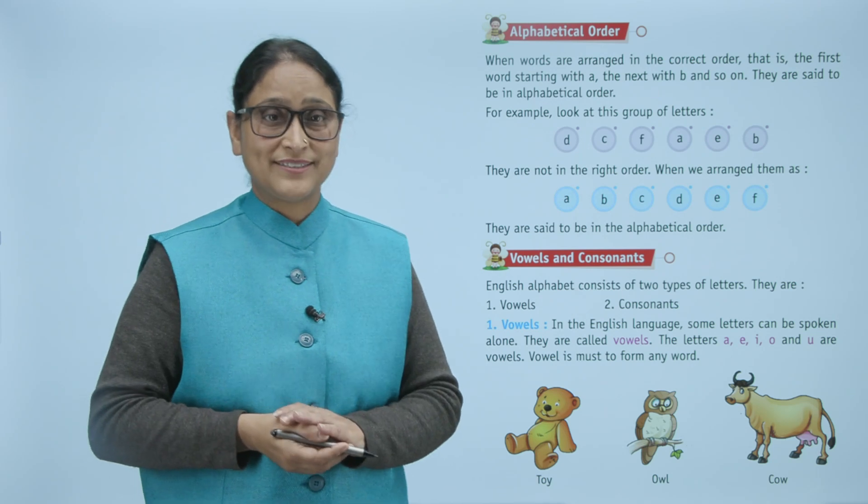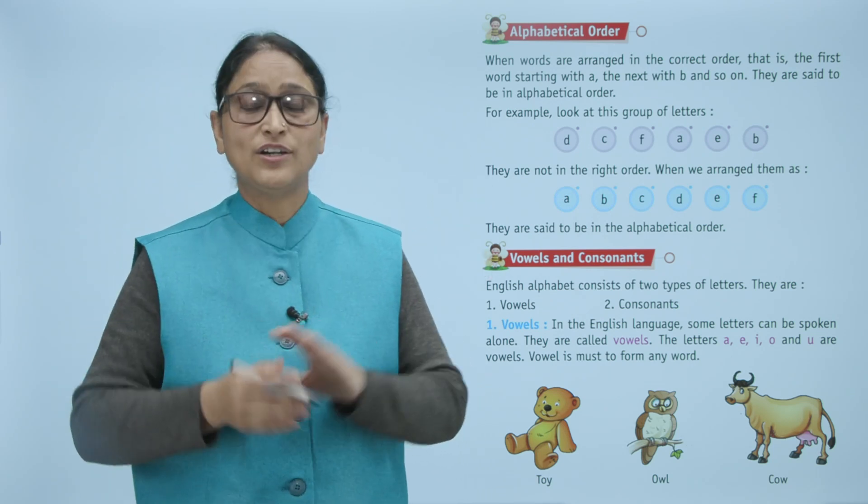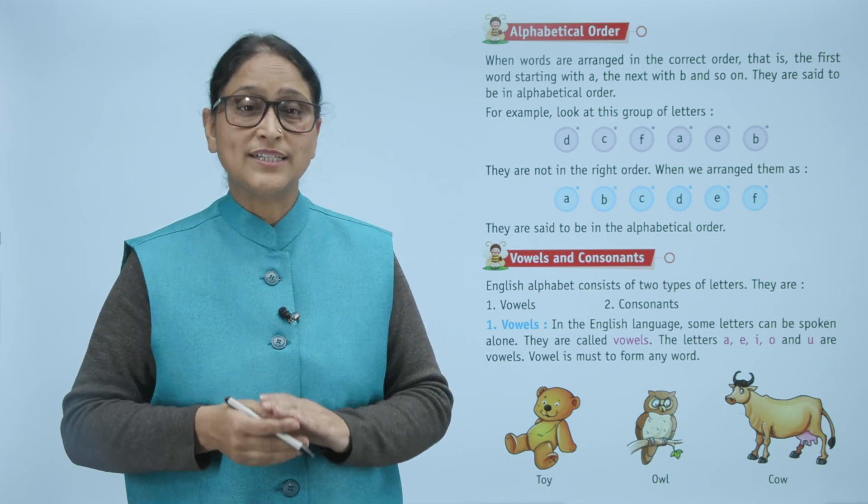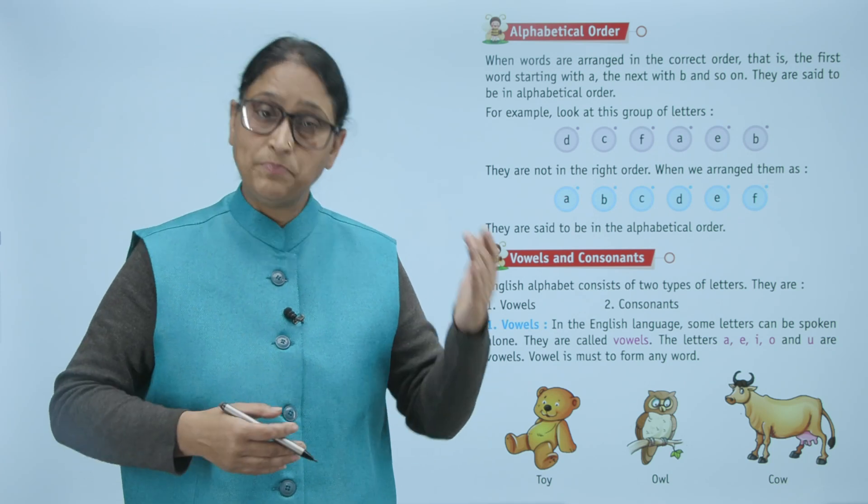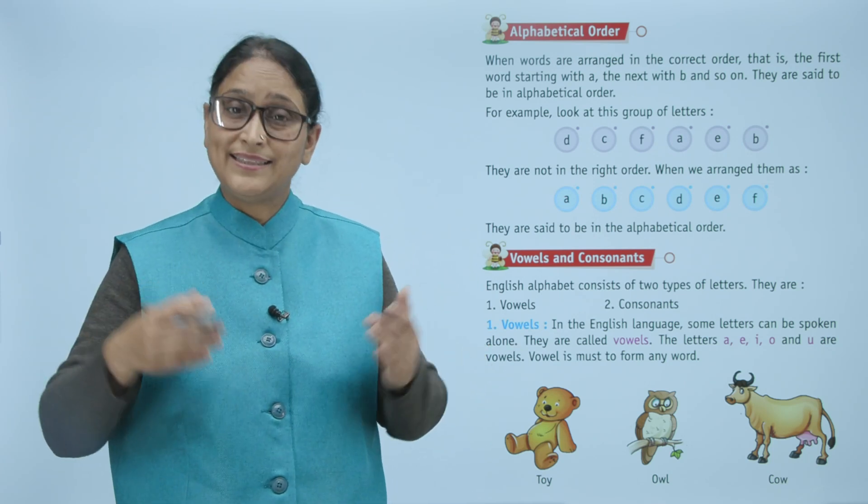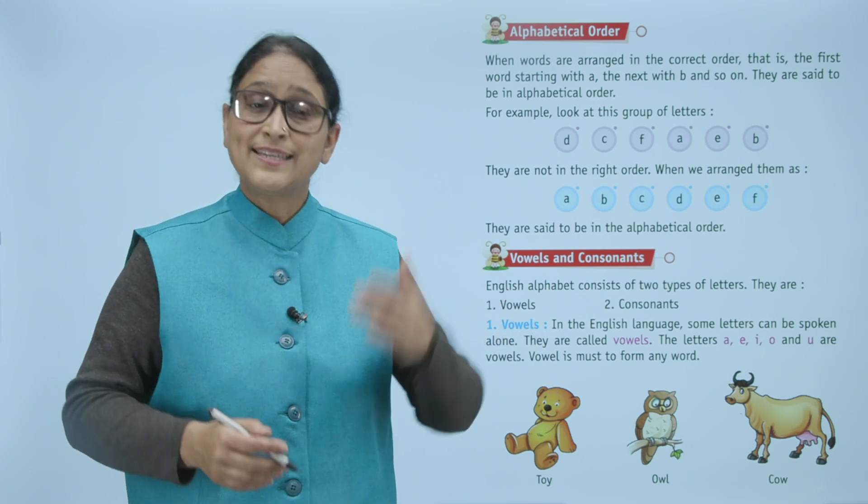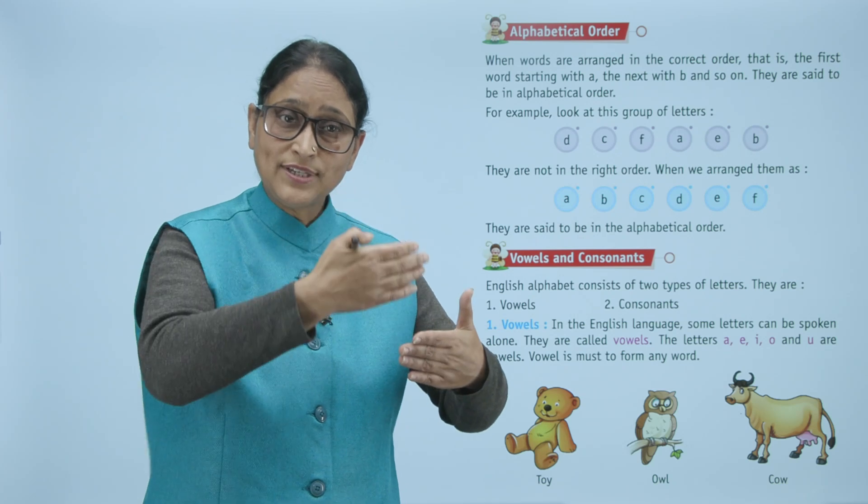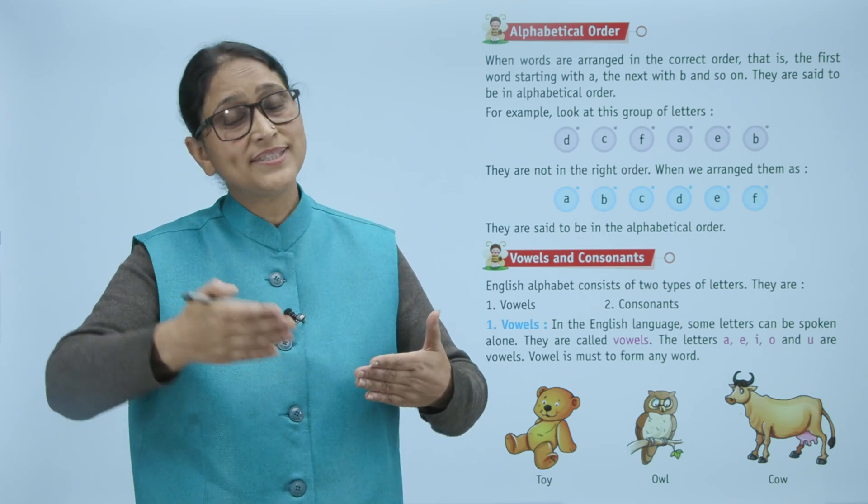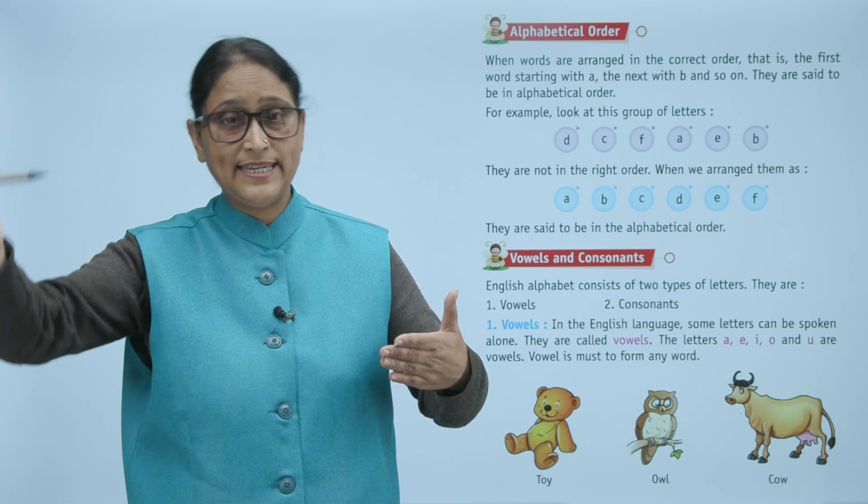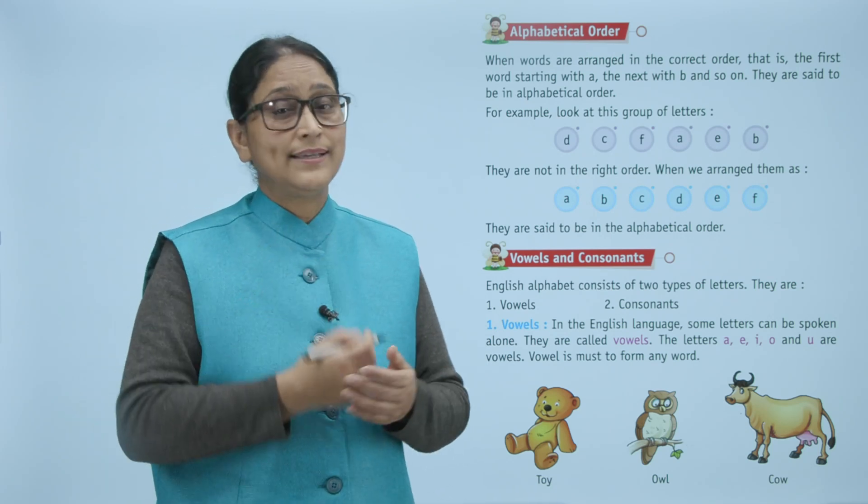Alphabetical order: when words are arranged in the correct order, that is, the first word starting with A, the next with B, and so on, they are said to be in alphabetical order. For example, look at this group of letters: B, C, F, A, E, B.